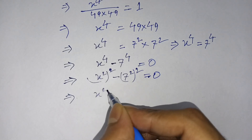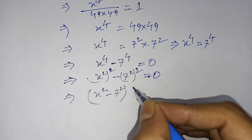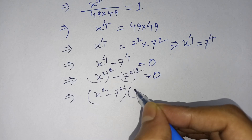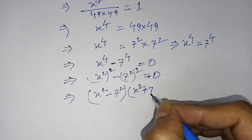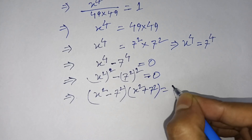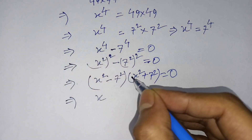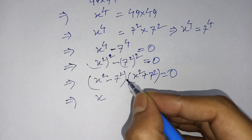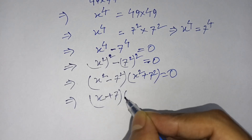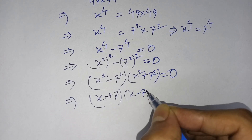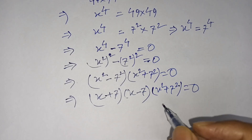So it will be (x squared minus 7 squared)(x squared plus 7 squared) is equal to 0. I also apply the a squared minus b squared formula again, giving (x plus 7)(x minus 7)(x squared plus 7 squared) is equal to 0.